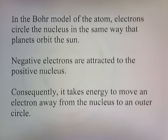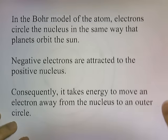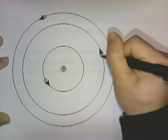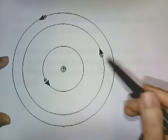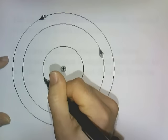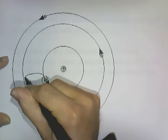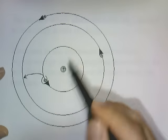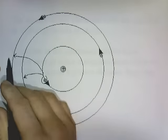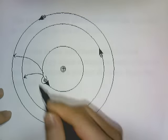In the Bohr model of the atom, electrons circle the nucleus in the same way that planets orbit around the Sun. Negative electrons are attracted to the positive nucleus, and consequently it takes energy to move an electron away from the nucleus to an outer circle. Rutherford came up with his model of the atom where the protons occupied the center of the nucleus and the electrons were very far away. Bohr further developed this by saying that electrons orbit the nucleus. Since opposite charges attract, pulling an electron away from the nucleus requires energy. These circles are referred to as energy levels, and the further away from the nucleus, the more energy it takes — so the more outermost the circle, the higher energy the electron has.